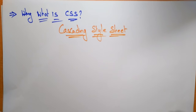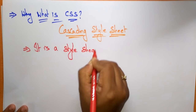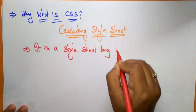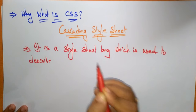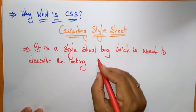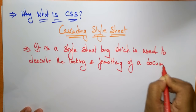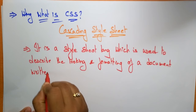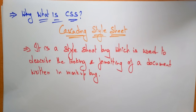CSS is a style sheet language — we call it one of the languages. It is a style sheet language which is used to describe the look and formatting of a document. It describes how a page is going to look, how beautiful you are going to present that page — the looking and formatting of a document written in a markup language.